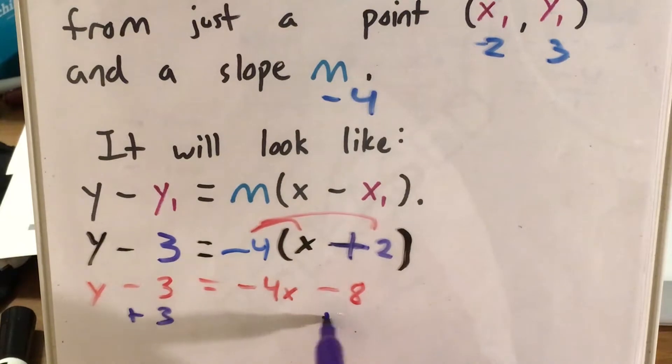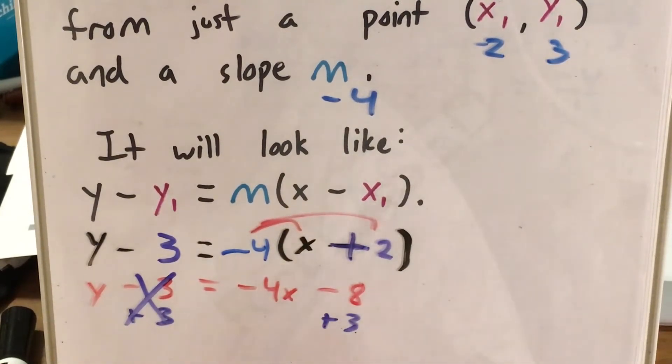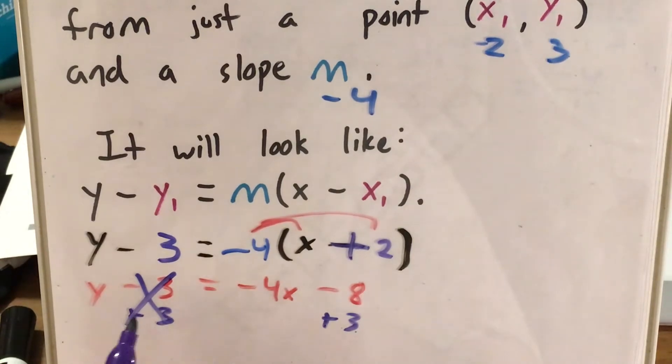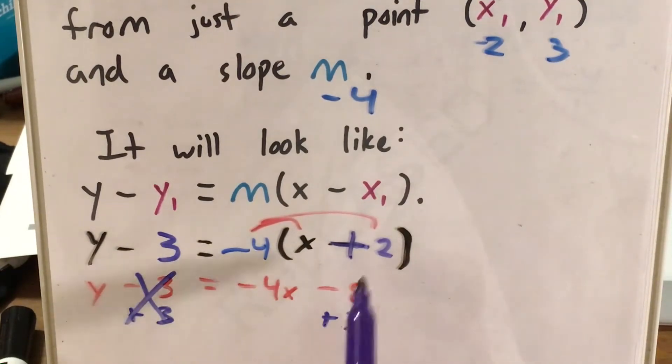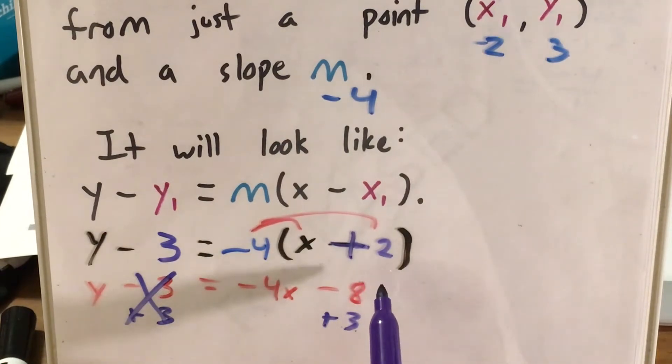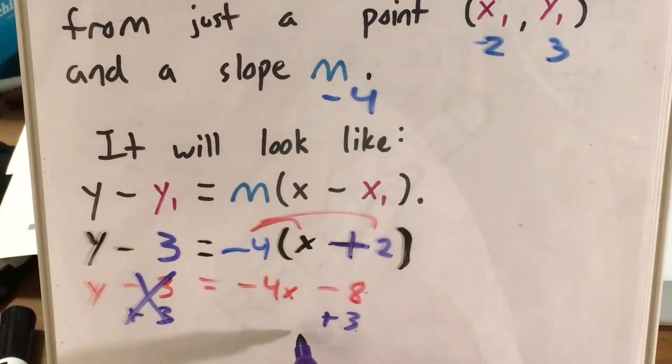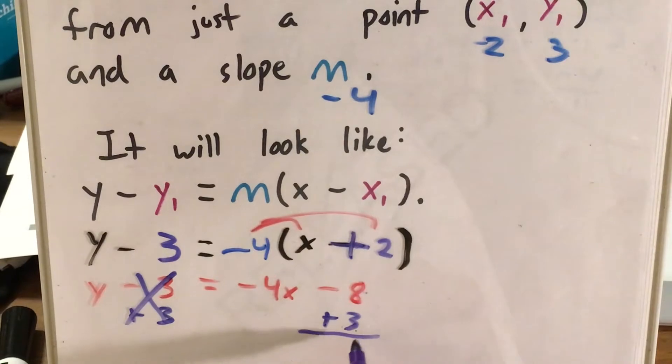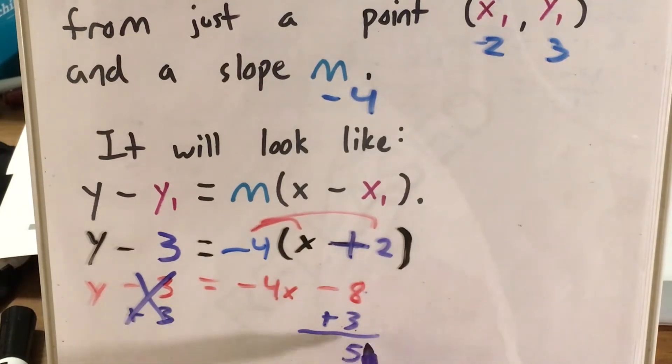Let's add 3 to both sides to get y by itself. -3 and +3 cancel. -8 + 3 is like if I owed someone $8 and paid them back $3, I would now owe them $5.